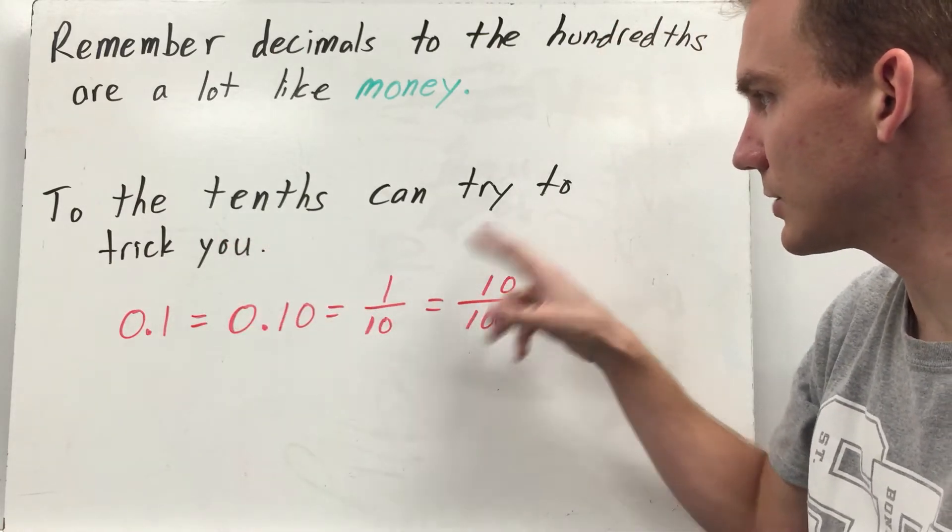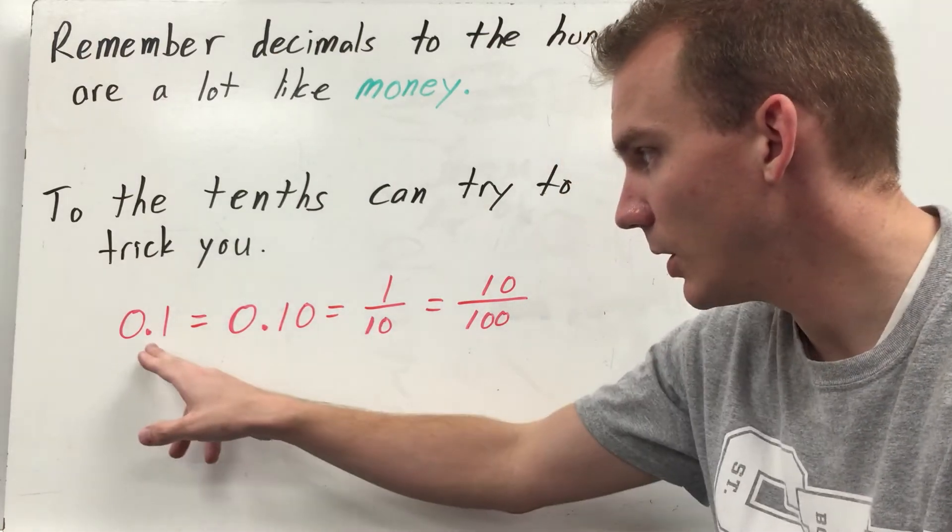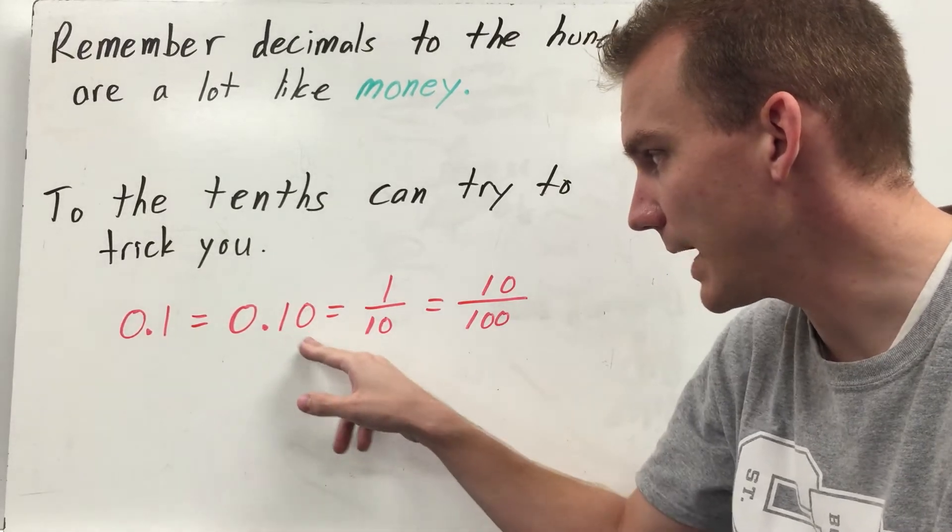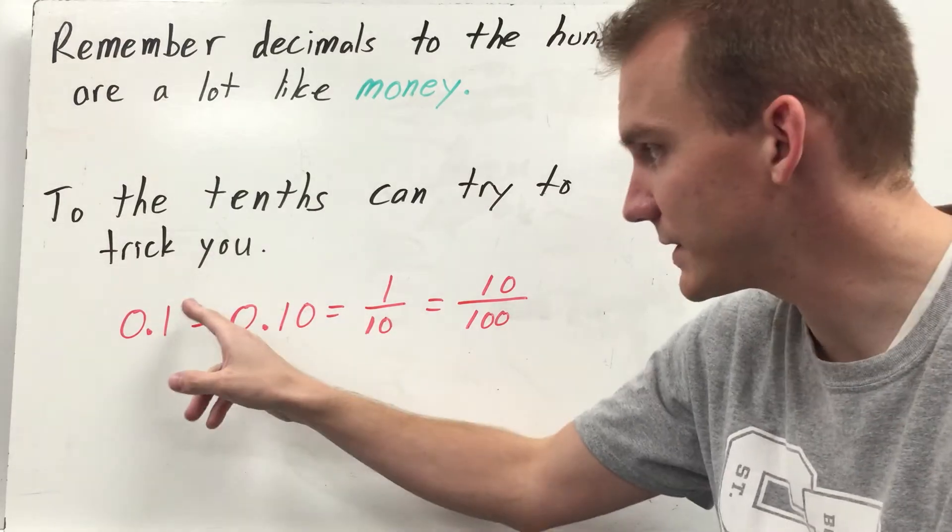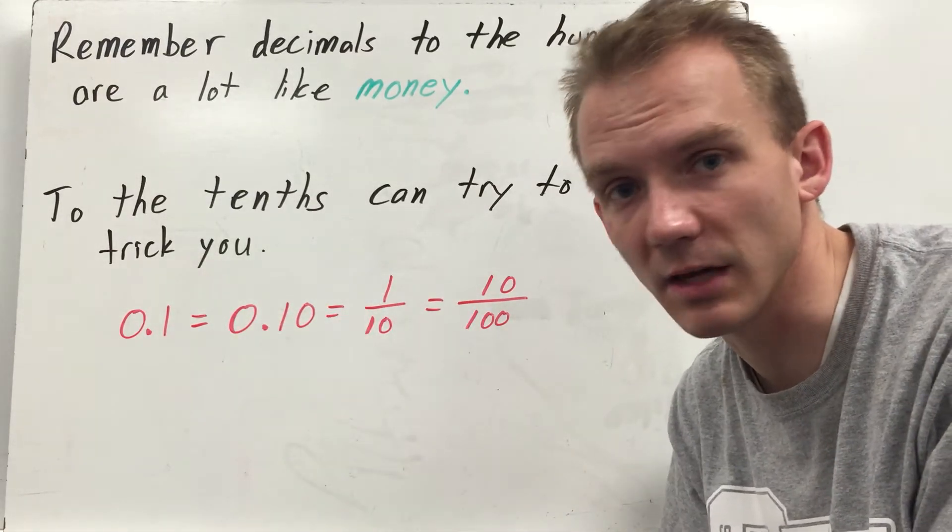The tenths can be a little bit tricky and they relate to hundredths as well. So like you have one tenth is written right here, 0.1 equals ten hundredths. It's the same number, you just put a zero. If you look back to the addition video, you remember I said you can just add zeros to the end. So one tenth is the same as ten hundredths, the exact same value.